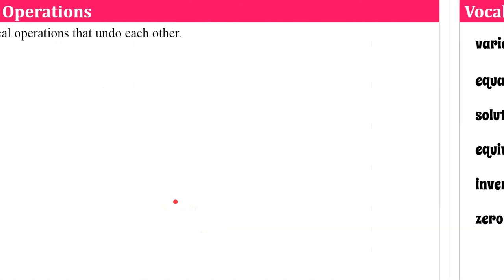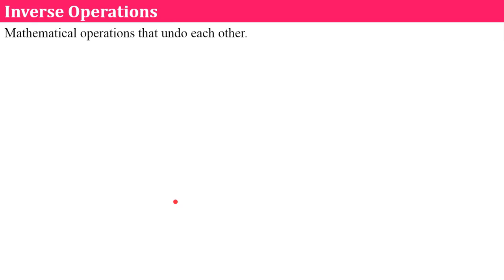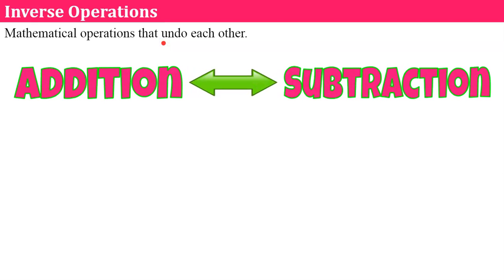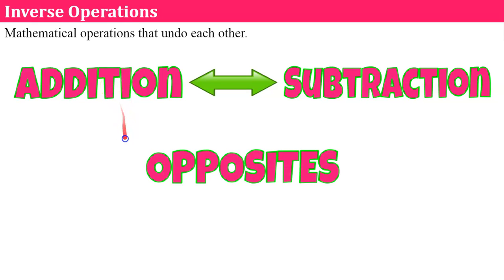Let's talk about inverse operations. Remember, these are mathematical operations that undo each other. When we talk about addition, addition is undone by subtraction and vice versa — subtraction is also undone by addition. They are opposite operations. We form opposites when we do the inverse.